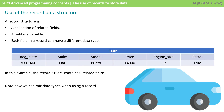There's also a data structure available in many languages called a record data structure. If you're programming in Python, this isn't something that's available to you, but it's available in other languages such as Visual Basic, so it's worth knowing about. The record structure is simply a collection of related fields where a field is a variable, and each field in a record can have a different data type.